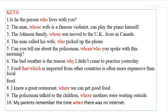Let's check the answers. Number one: 'Is he the person who lives with you?' — because 'person' refers to a person, we use 'who.' Number two: 'Except for the man whose wife is a famous violinist, can play the piano himself' — because 'the man' has a position of possession with his wife, we use 'whose' instead of 'his.'